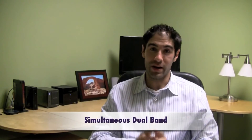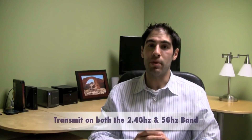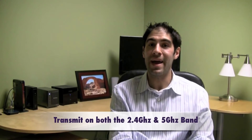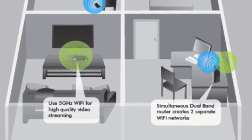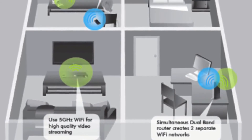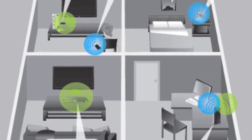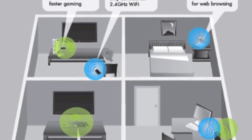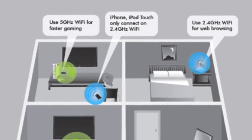The second is what we call simultaneous dual band, and these are the routers that are capable of transmitting on both the 2.4GHz band and the 5GHz band at the same time. This allows you to provide a completely separate, clean network for those applications like HD video streaming and gaming, while utilizing the 2.4GHz band for all your other devices.